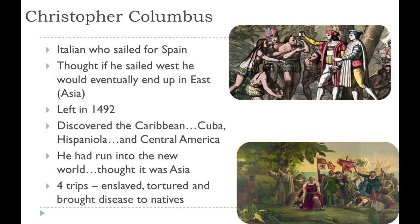The first Spanish explorer we'll talk about is Christopher Columbus — he was actually Italian, but he went to Queen Isabel and King Ferdinand with his idea and they decided to fund him. He wanted to sail west to find a route to India. Diaz had sailed but hadn't found the eastern route yet, so Columbus set out to find it. He left in 1492 and discovered the Caribbean.